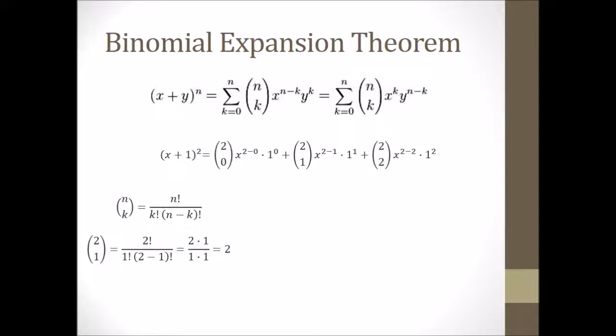So continuing on: X plus 1 squared — the way we expand that, since the power is 2, means we're asking how many ways out of 2 can you choose 0, and there's only one way. Notice that the first term X is to the largest power — 2 minus the number we're picking, which is 0 — and the 1 from the binomial is to the 0 power. As we continue, the 0 increases to 1 in the combination formula, the degree on the variable decreases, and the degree on the number increases. Simplifying this gives us X squared plus 2X plus 1.